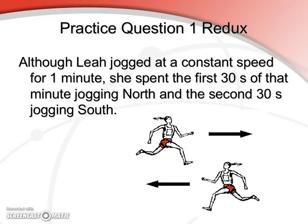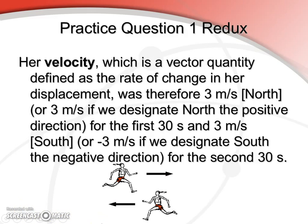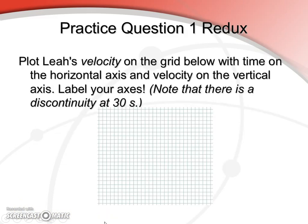Alright, so let's discuss this problem a bit more. So if we define our axes, we have our velocity in meters per second, our time in seconds. And of course, in this case, because we are running north for the first 30 seconds, we have a positive velocity. And we're running south for the last 30 seconds, and we've got a negative velocity. So this is what your graph should look like here.